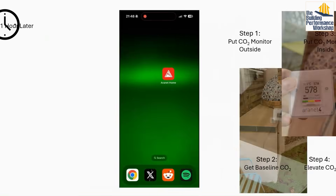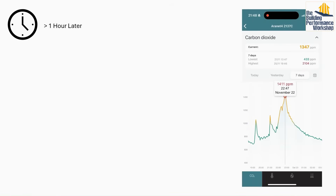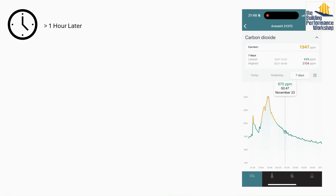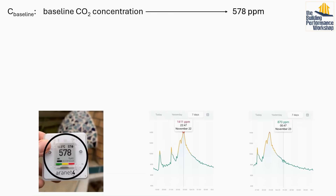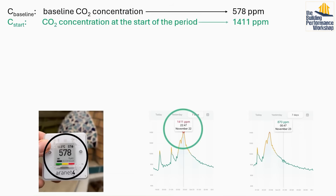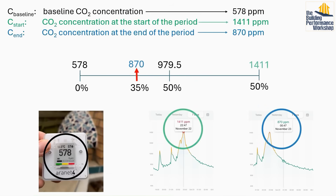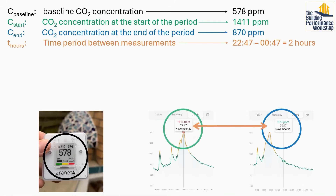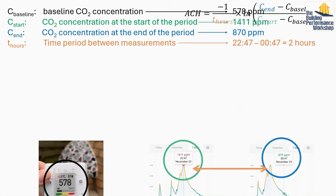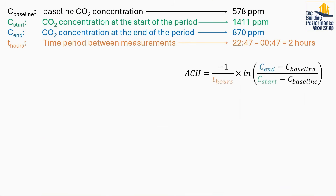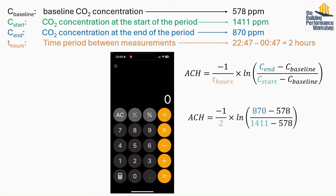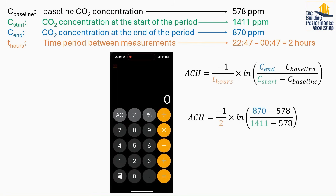After at least an hour, come back and look at the data. The numbers you want to write down are: the outdoor CO2 concentration, the concentration when you left the room, the CO2 concentration when it has decayed to a little over halfway between the outdoor level and the level when you left, and the length of time between those two points. Put these numbers into the equation and solve for the ACH. I'll show you how to calculate that using my calculator.